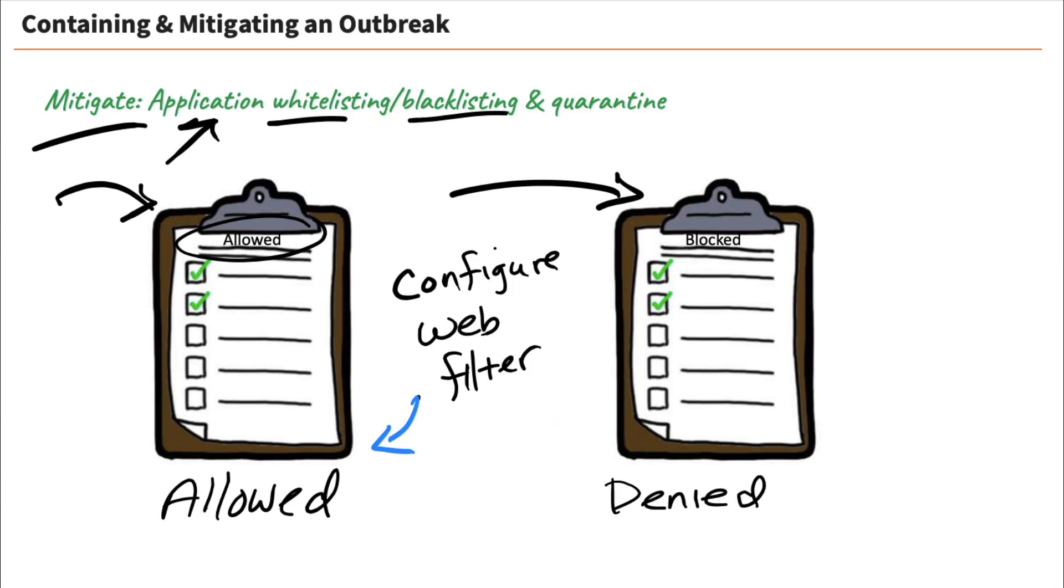Whereas on the flip side, if I was to use a blacklist, then I would simply say what is denied. Because by default, everything is allowed. And that's the difference. And the thing is, as we're using these security products and configuring whitelisting and blacklisting, many of them have a quarantine feature.